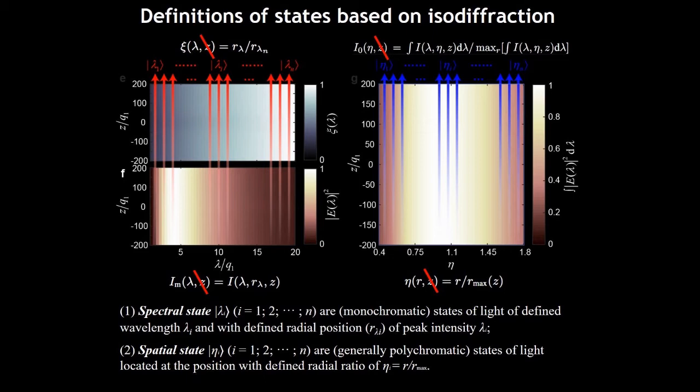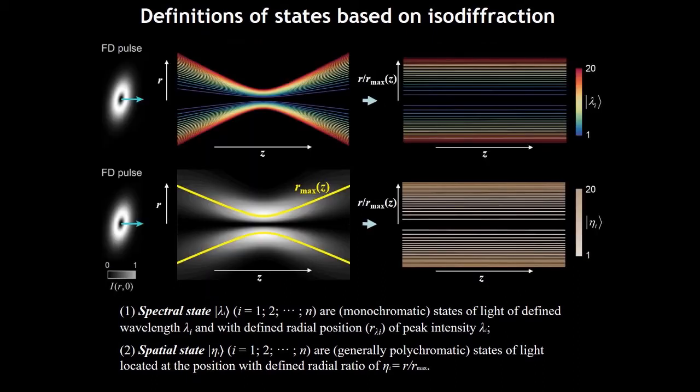And we plotted the radial ratios of the maximum color position, KSI, and the maximum intensity for the various monochromatic components. And then also the total intensity distribution versus the radial ratio. As it's seen that these parameters are all propagation independent. The Z independent revealing the isodiffraction property.